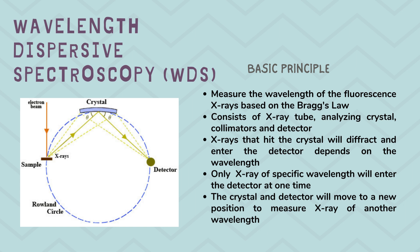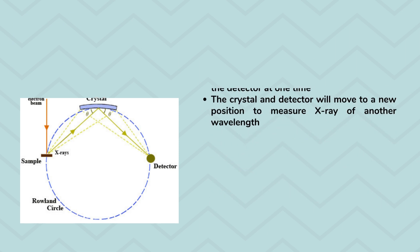Only X-rays of a specific wavelength will enter the detector at one time. The crystal and detector will then move to a new position to measure X-rays of another wavelength.